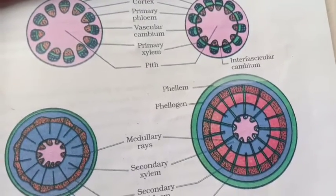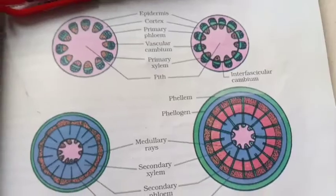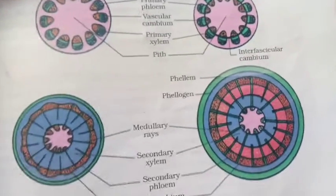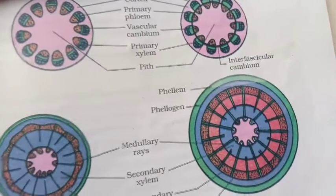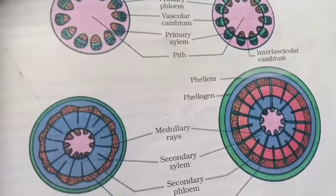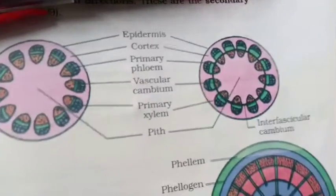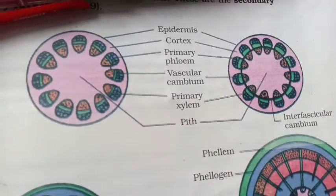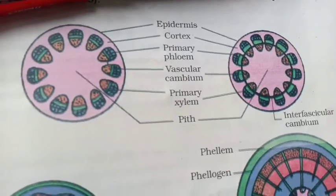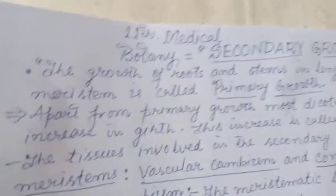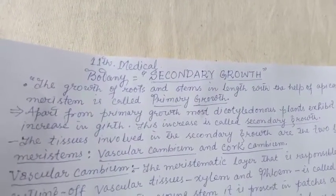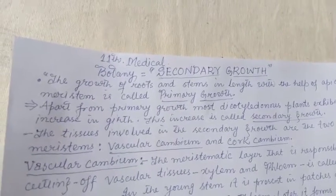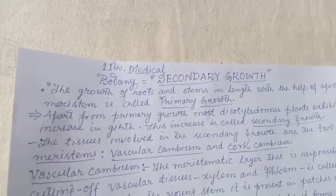Students of 11th class medical group, today in botany we are going to take up secondary growth. Previously we have been dealing with the anatomy of the leaf, anatomy of the monocot and dicot stem, and anatomy of the monocot and dicot root. Today we will learn about secondary growth. The growth of roots and stems in length, with the help of apical meristem, is called primary growth — that is the normal or routine growth activity of the apical meristem.